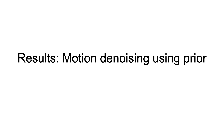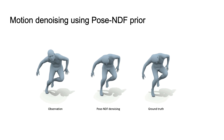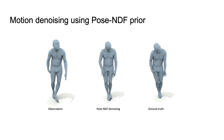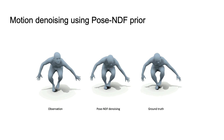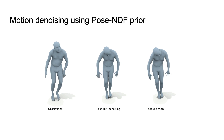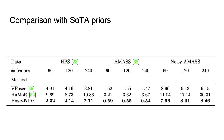We now show results on downstream tasks, starting with motion denoising using our prior. We show the result of our method on motion denoising given a noisy observation as input, as shown in the video. We quantitatively compare our proposed prior with state-of-the-art priors such as VPoser and HUMOR and show that the Pose NDF-based prior outperforms previous work on real-world mocap data such as HPS and MS.